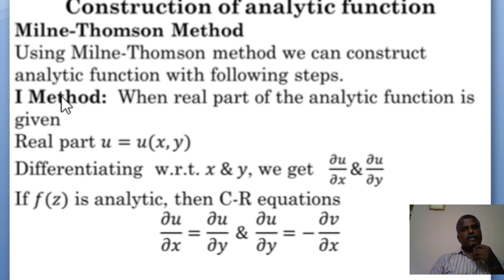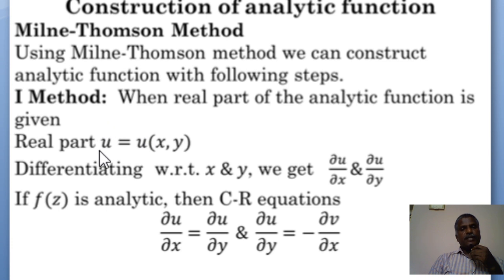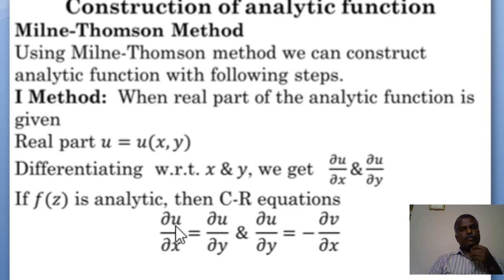In the first method, when the real part of the analytic function is given — that is, real part u is equal to u(x, y) — we find partial derivatives with respect to x and y, that is ∂u/∂x and ∂u/∂y. Since f(z) is analytic, the Cauchy-Riemann equations are satisfied: ∂u/∂x = ∂v/∂y and ∂u/∂y = −∂v/∂x.